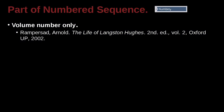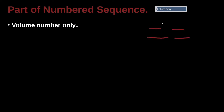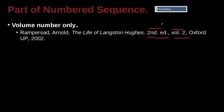Here's an example of numbers again, and here we have their author, Ramsburg Arnold, The Life of Langston Hughes, Second Edition, Volume 2, Oxford University Press, 2002. So we have the edition and the volume number, because there could be more volumes — three, four, five volumes inside that series of books.